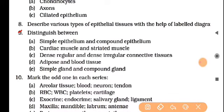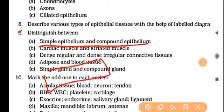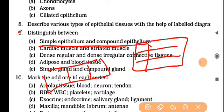Distinguish between simple epithelial and compound epithelial tissues. Simple epithelial tissues are single-layered, while compound epithelial tissues are multi-layered. That is the basic difference between the two.